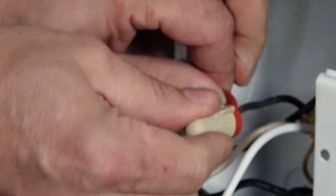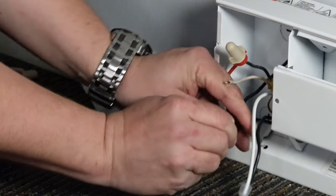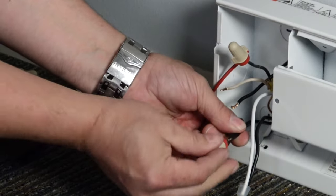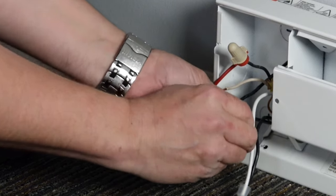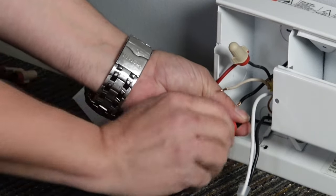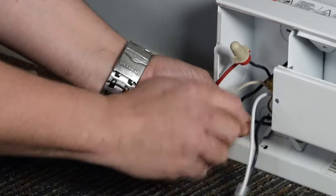Now take the black supply wire coming from the wall and connect it to the red wire on the thermostat. Then take the black thermostat wire and connect it to the black wire on the heater.